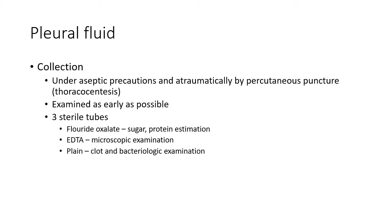Pleural fluid is collected in three sterile tubes. The first contains 15 mg of fluoride oxalate with 5 ml of pleural fluid for sugar and protein estimation. The second contains 15 mg of EDTA with 5 ml for microscopic examination. The third is a plain tube without anticoagulant with 5 ml for observation of clot and bacteriologic examination.